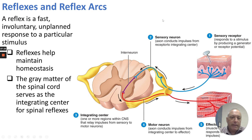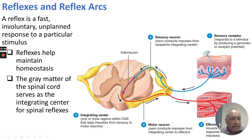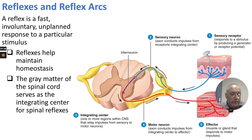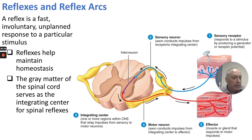Reflex arcs are very fast, involuntary, unplanned, and occur in response to a particular stimulus. Reflexes help maintain homeostasis, and the gray matter of the spinal cord serves as the integrating center. An afferent pathway activates pain receptors, which generate an action potential into the posterior horn, synapse onto an interneuron, and then activate a motor neuron — the effector. An example is a withdrawal reflex: you step on a pin and withdraw your foot.